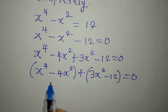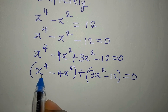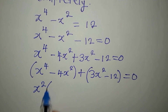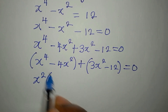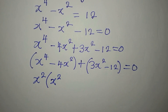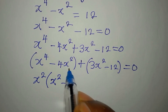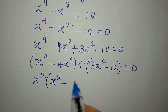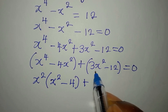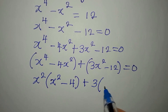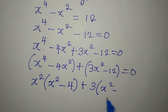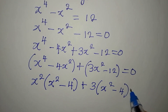x to the power of 2 is common to the first group. x squared comes out as a common factor, leaving x squared minus 4. Then the common factor for the second group is 3, leaving x squared minus 4 as well. So 3 divided into 12 gives 4. We have 0.